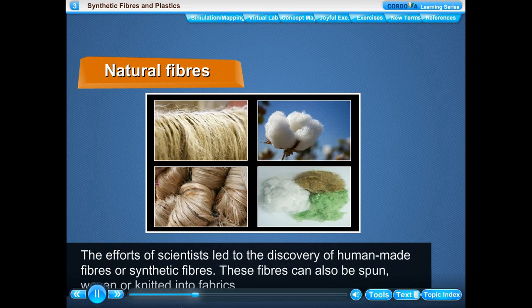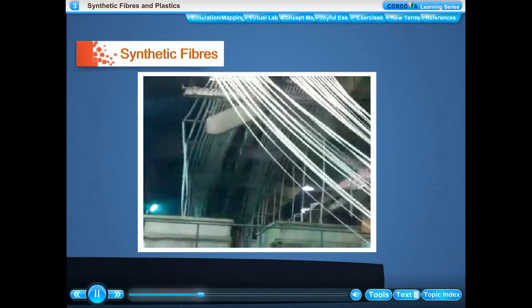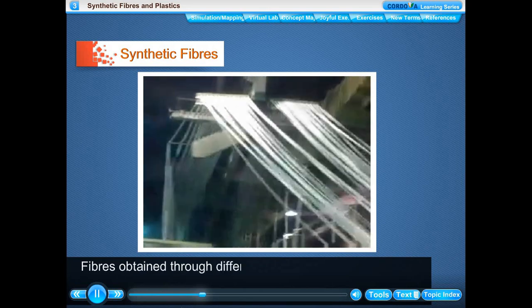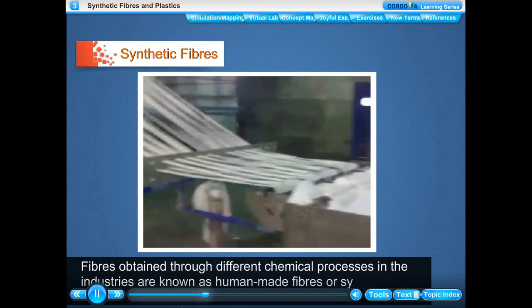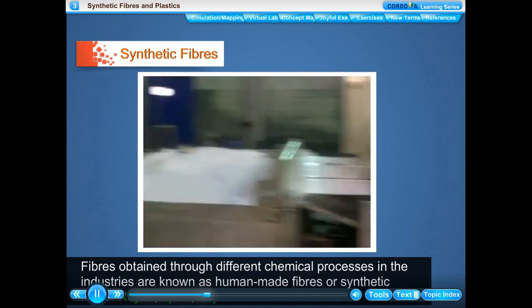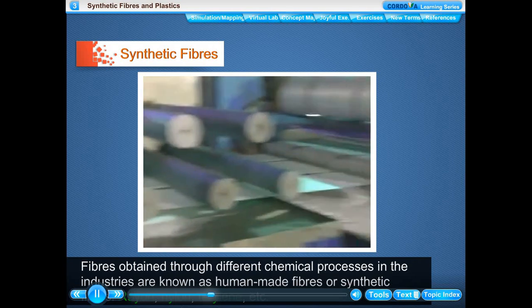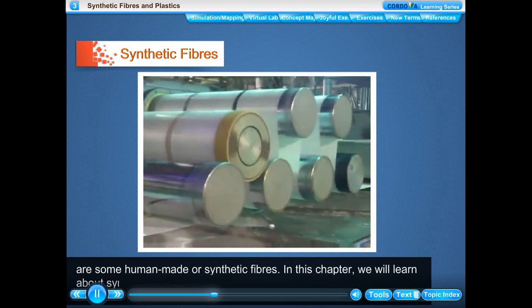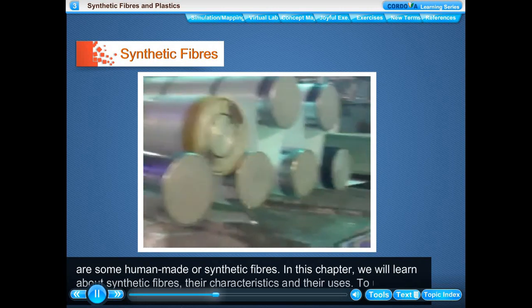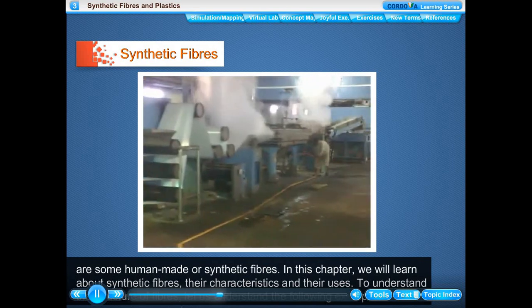These fibers can also be spun, woven, or knitted into fabrics. Fibers obtained through different chemical processes in industries are known as human-made or synthetic fibers. Rayon, nylon, terylene, etc. are some synthetic fibers. In this chapter, we will learn about synthetic fibers, their characteristics, and their uses.